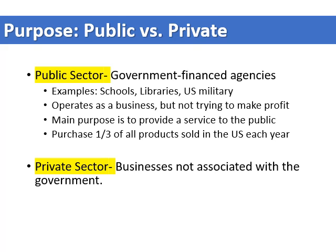The public sector is huge — they purchase one-third of all products, 33% of products sold in the United States each year. It is a huge part of our free enterprise system. In contrast, the private sector is simply businesses not associated with the government — the government doesn't give them money in order to run their business. That's the difference between the public sector and the private sector.